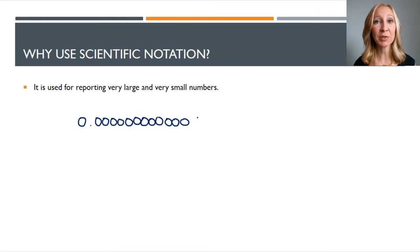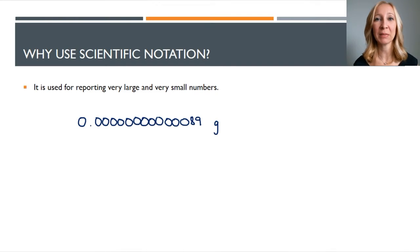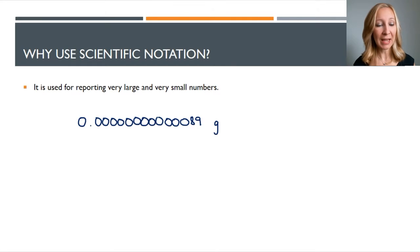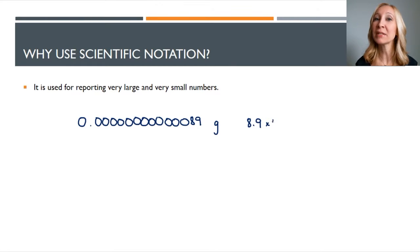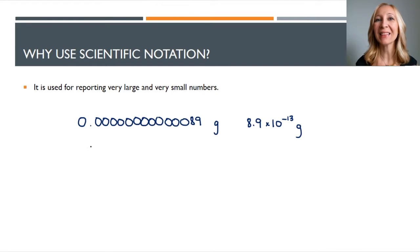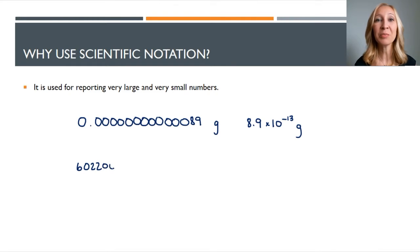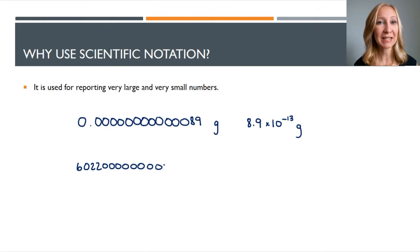Let's take a look at this mass: point zero zero zero zero — lots and lots of zeros — eight nine grams. Now I wouldn't want to have to write that out every single time it needed to be represented. Instead, I want a shortcut, so I'm going to write out eight point nine times ten to the negative thirteenth grams. It still represents the same number, but it's a lot less work, a lot less counting zeros, and a lot less likely that I will make a mistake.